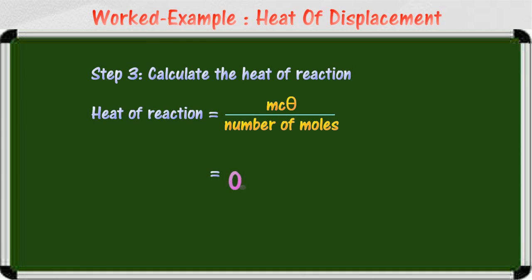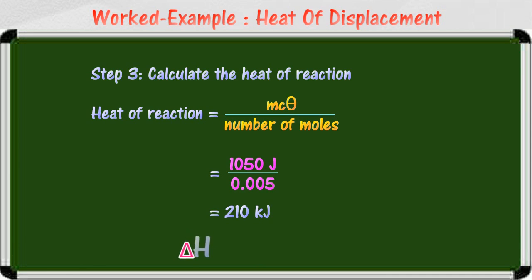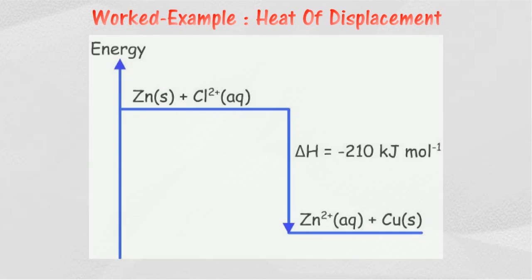In this case, 0.005 moles of copper(II) ion releases 1050 joules of heat, therefore one mole of copper(II) ion releases 210 kilojoules of heat. Since this is an exothermic reaction, the heat of displacement of copper from copper(II) sulfate solution by zinc is negative 210 kilojoules per mole. The figure shows the energy level diagram for the displacement of copper from copper(II) sulfate solution by zinc.